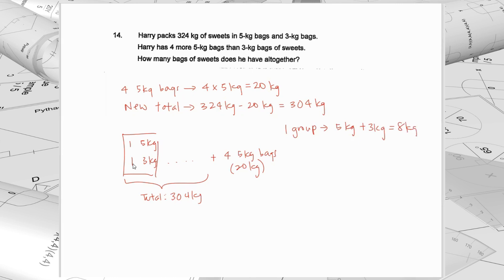How many 8 kgs are there in 304? So I'm finding number of groups. Take 304, divide by 8. Do a long division just to give us 38 groups.